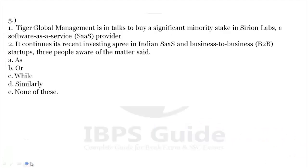Question number 5. 'Tiger Global Management is in talks to buy a significant minority stake in Sirion Labs, a software-as-a-service, that is SAAS, provider. As it continues its recent investing spree in Indian SAAS and business-to-business, that is B2B, start-ups. Three people aware of the matter said.' Options: as, while, similarly, none of these. It is not opposite information and not a timing contrast, so the answer will be 'as.' The correct sentence uses 'as it continues its recent investing spree.'